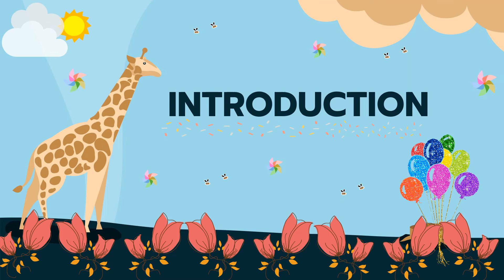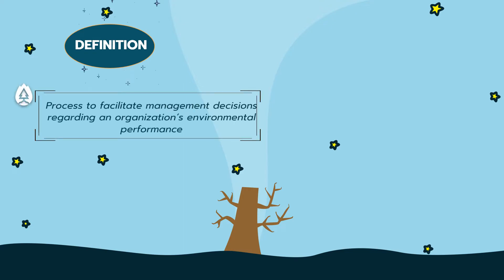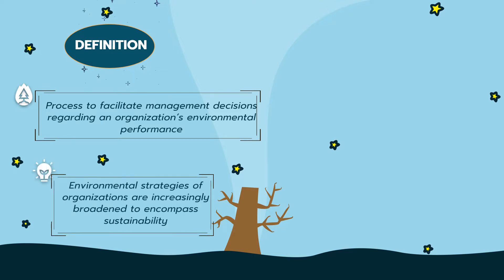Introduction of Environmental Performance Evaluation, EPE. According to International Standard Organization ISO 14031 (1999), Environmental Performance Evaluation, EPE, is a process to facilitate management decisions regarding an organization's environmental performance by selecting indicators, collecting and analyzing data, assessing information against environmental performance criteria, reporting and communicating, and periodically reviewing and improving this process. As environmental strategies of organizations are increasingly broadened to encompass sustainability, not only the environment but also social and economic performance comes up for evaluation.